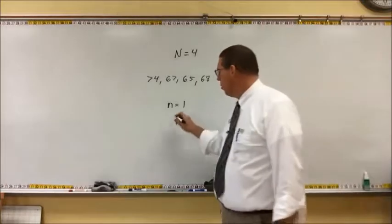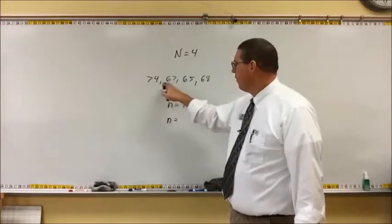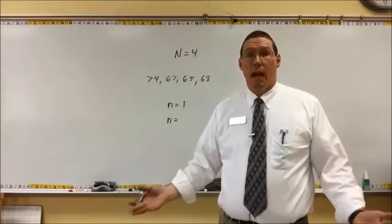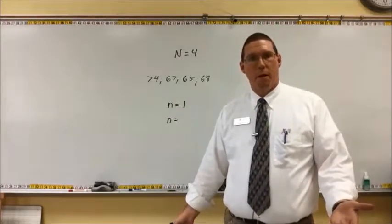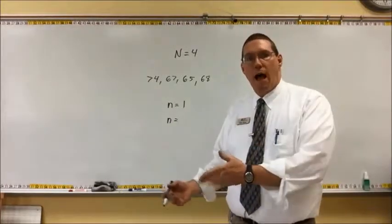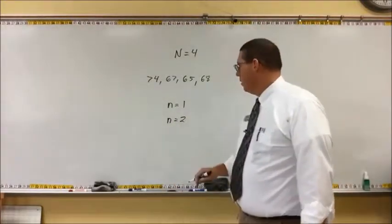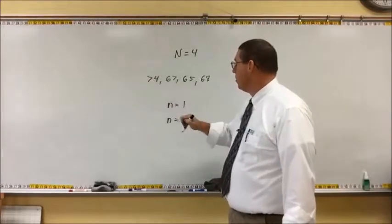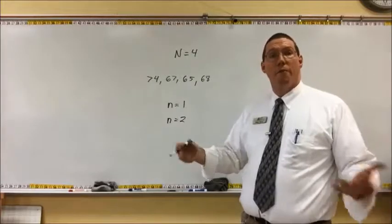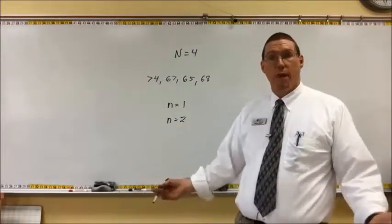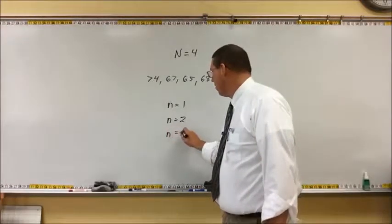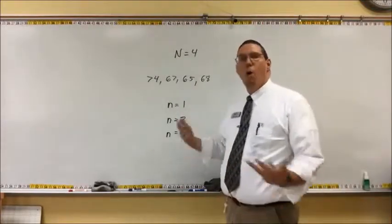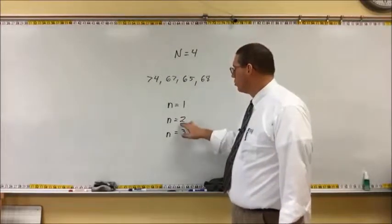Couldn't I also only measure two of them? I could measure these two, or these two, or these two, or these two — that would be some of them, not all of them, and that would be a sample size of two. Is there any other sample size? Couldn't I do three? I can measure three out of the four people — that's some of them, so it's a sample with a sample size of three. So if I wanted to take a sample from this population, I can only take a sample of either one, or two, or three.